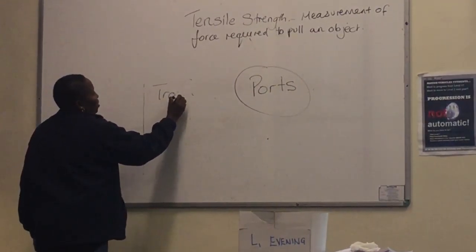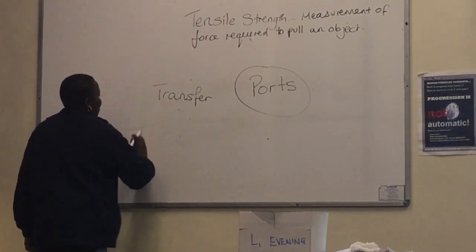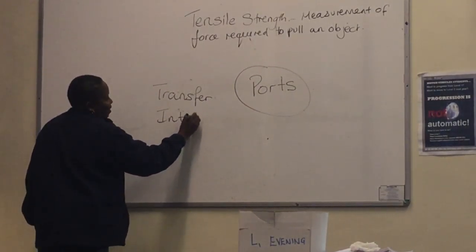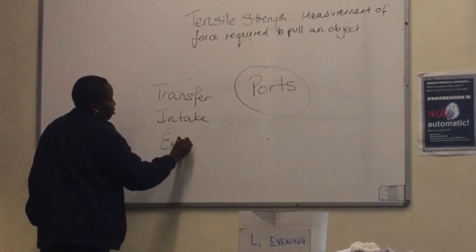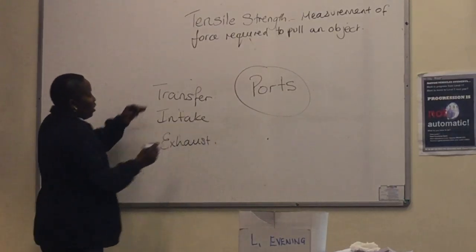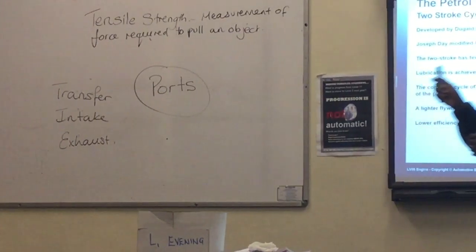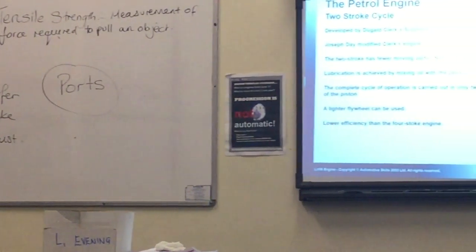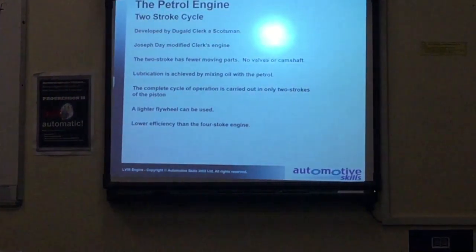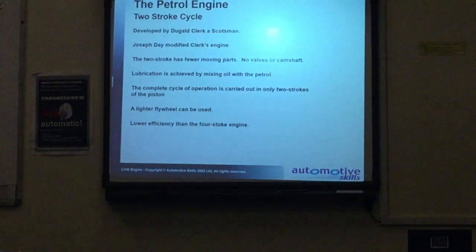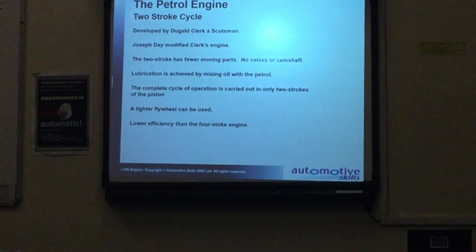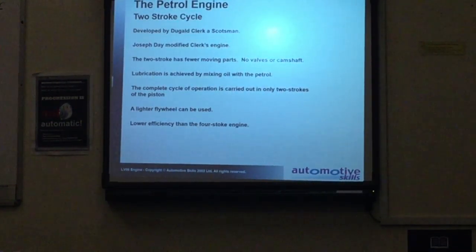One port is called the transfer port, another port is for intake, and the other port is for exhaust. So we have an intake port, an exhaust port, and a transfer port — instead of valves we have ports. An advantage of the two-stroke over the four-stroke is that it has fewer parts: valves are missing, the valve operating mechanism is not there, there is no camshaft, and also a lighter flywheel, which reduces the overall weight of the engine.